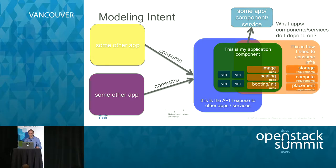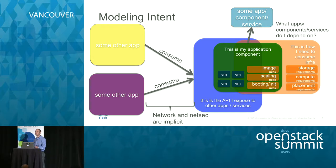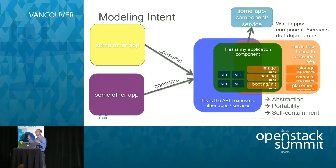As we capture these provide-and-consume models directly in the applications, the world starts looking a lot simpler — things like network connectivity and security start simplifying down and become implicit in the design of the architecture. If you describe your application this way, it's very easy for someone managing the network to understand the security requirements because you've essentially told them in building this model. On the application side, you no longer need to think about all the low-level constructs — you can build a template for your application and know that it can be deployed in many different scenarios, sufficiently abstract from the underlying infrastructure, portable across different clouds, and self-contained.